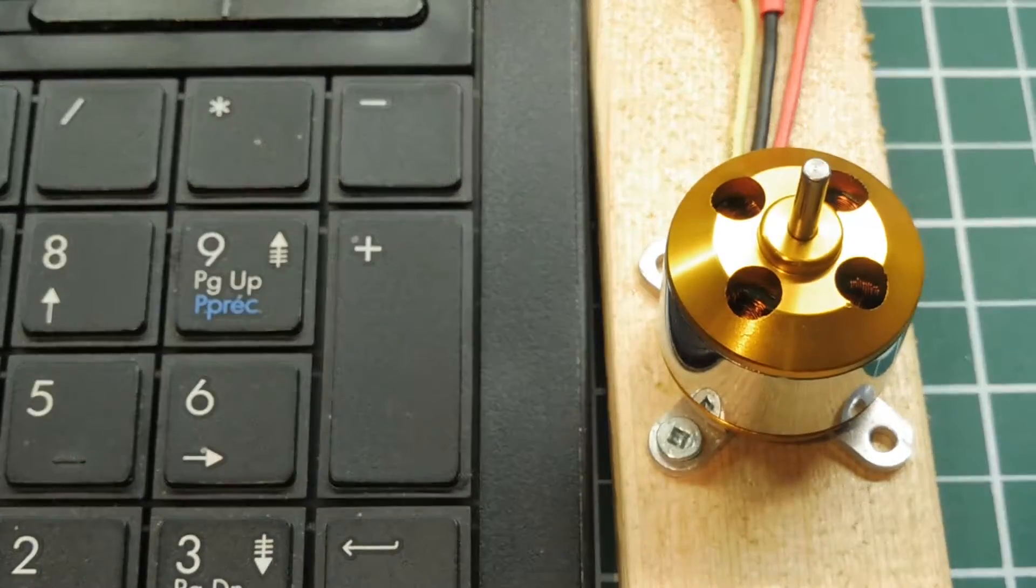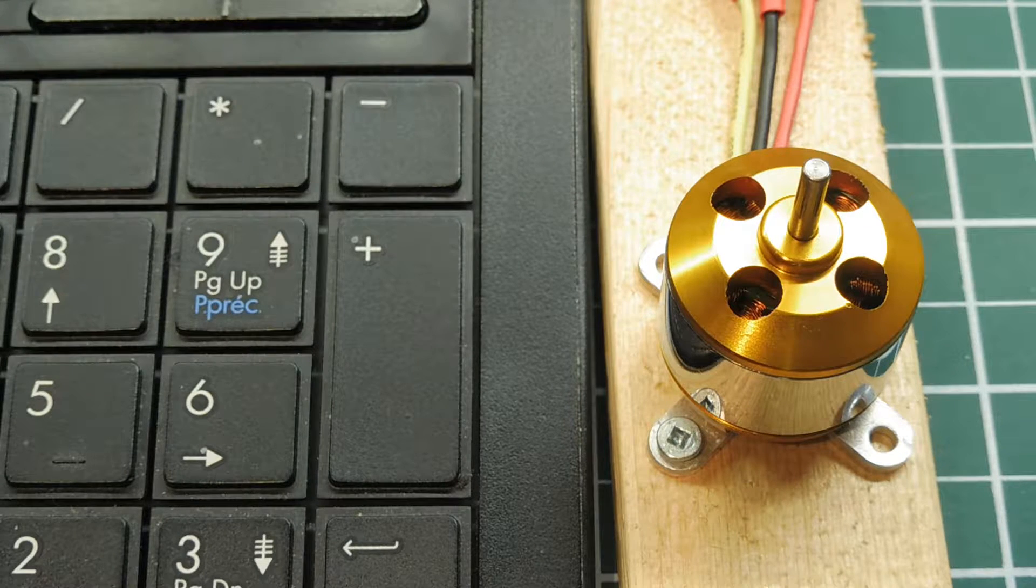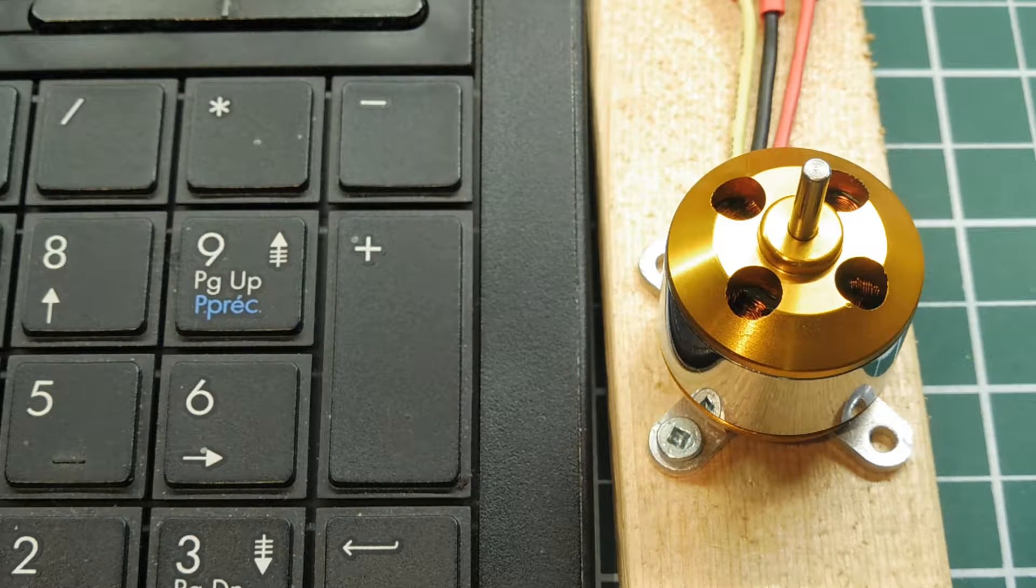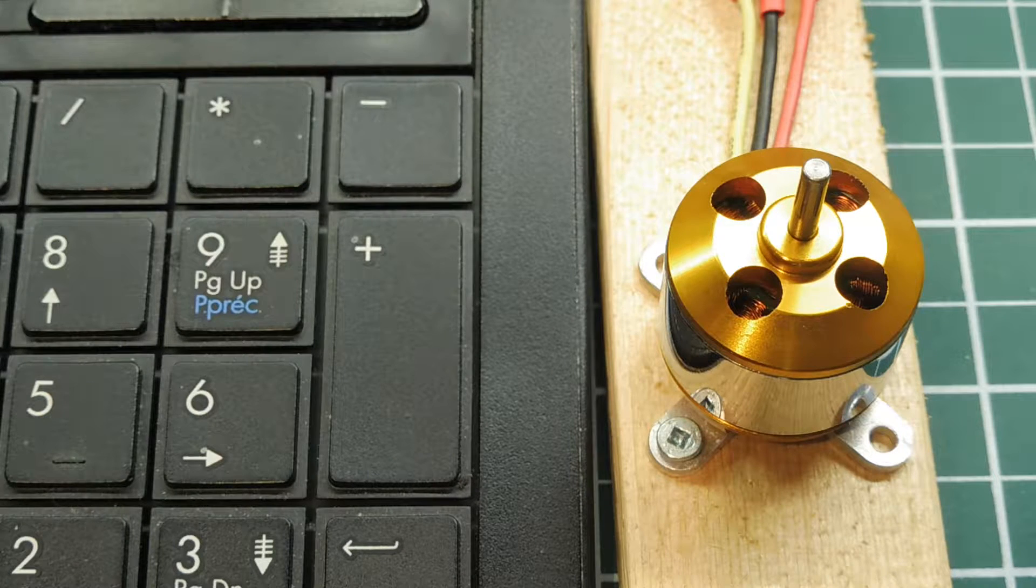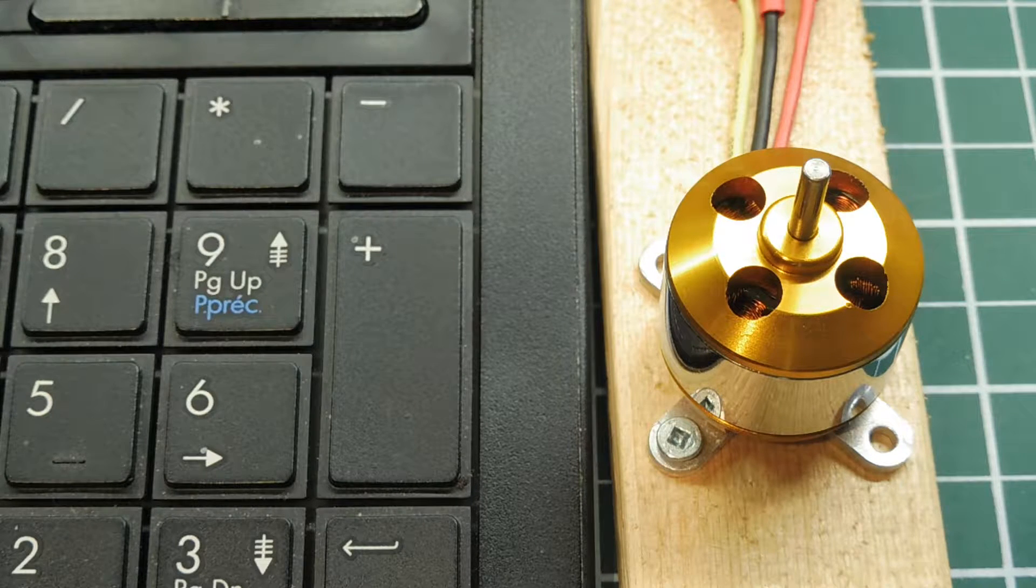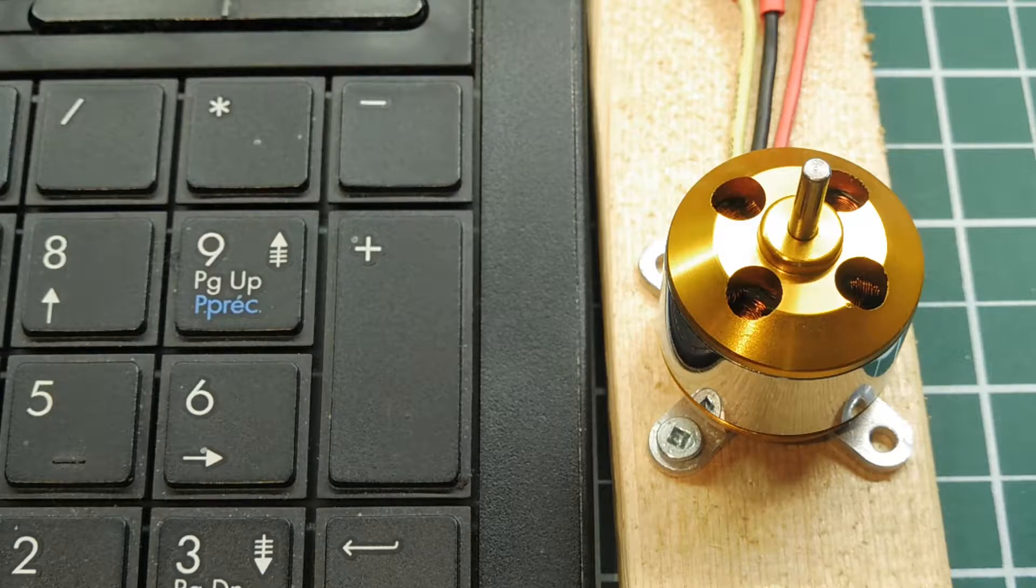Now the same control pulses used to drive a servo motor can also be used to control a DC brushless motor, by sending those control pulses into the ESC, the electronic speed control of the brushless motor, as I'll demonstrate.